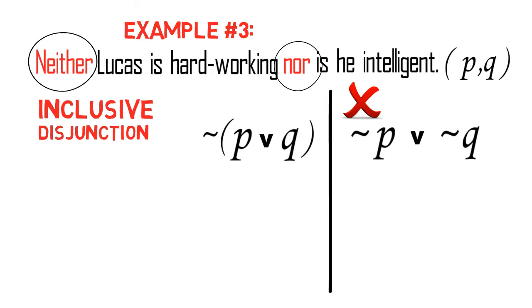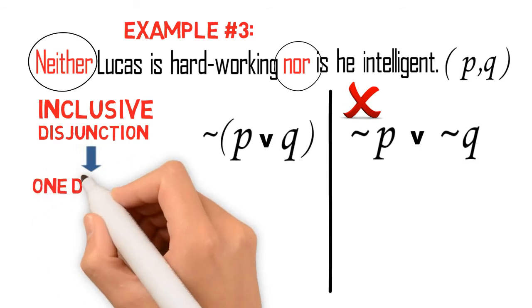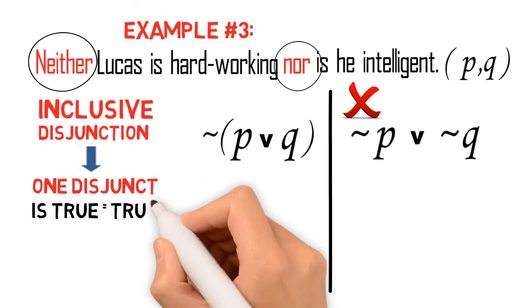But let me explain why ~(P v Q) is not the same with ~P v ~Q. If we recall, one of the rules in inclusive disjunction says that the inclusive disjunction is true if at least one of the disjuncts is true.